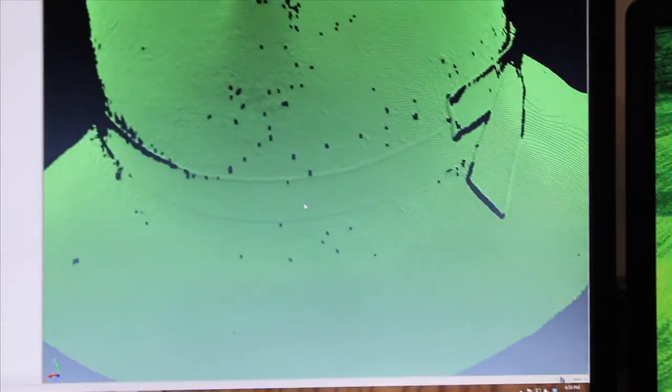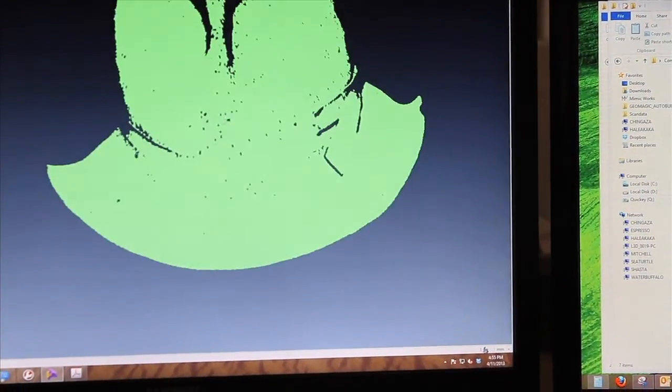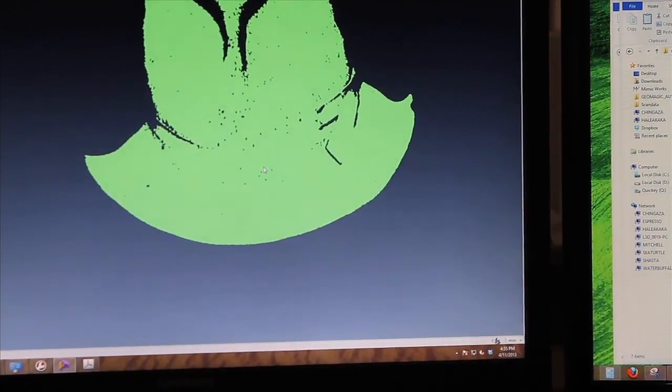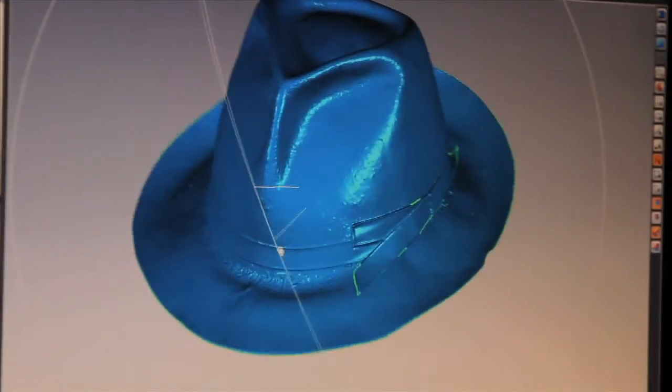This whole surface is made up of millions and millions of little tiny points. What the software will do is once we have the entire hat scanned, it will go into areas that are a little bit smoother and throw away some of those points so we can make it a lighter weight model. Then we will build this into one continuous polygon model, so it will be one smooth surface with no holes in it.